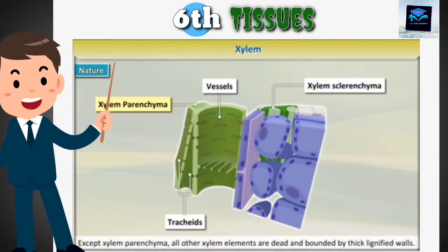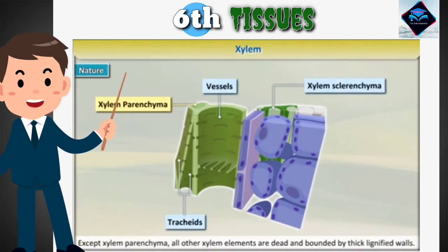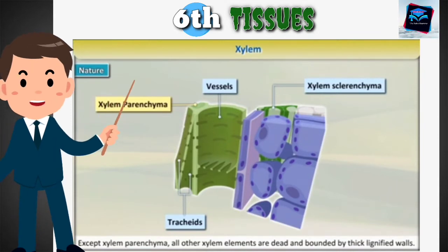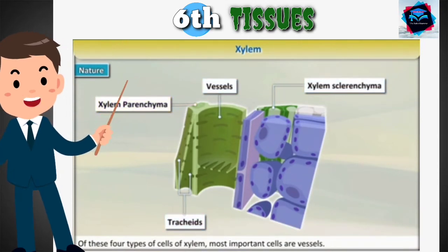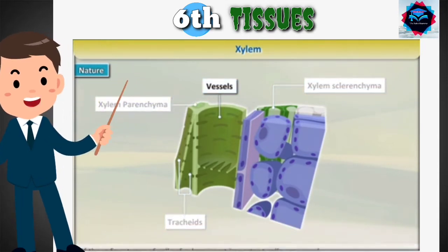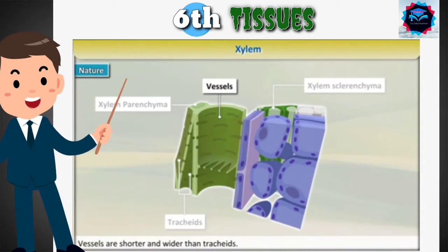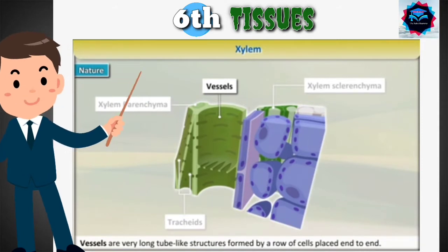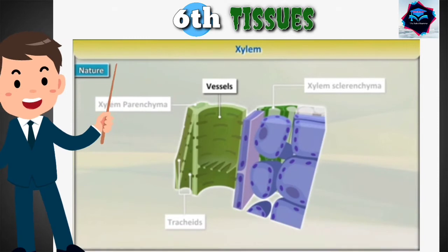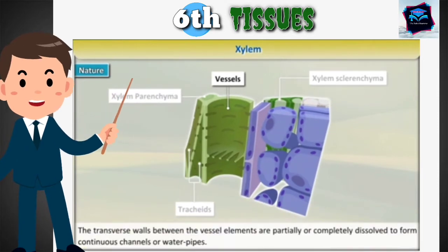Except xylem parenchyma, all other xylem elements are dead and bounded by thick lignified walls. Of these four types of cells, the most important are vessels. Vessels are shorter and wider than tracheids. Vessels are very long tube-like structures formed by a row of cells placed end to end. The transverse walls between the vessel elements are